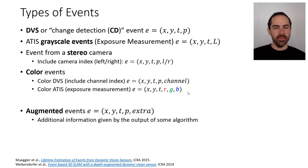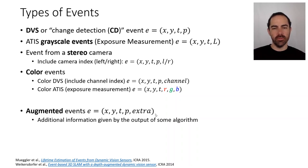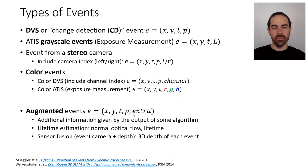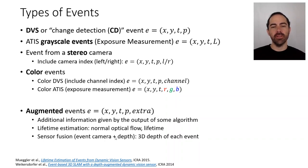We also have the concept of augmented events. These have the x, y coordinate of the pixel, the timestamp, and the polarity — like a normal change detection event — but we can add more information given by the output of some algorithms. Examples include the lifetime of the event, the optical flow, or depth from combining an event camera and a depth sensor.